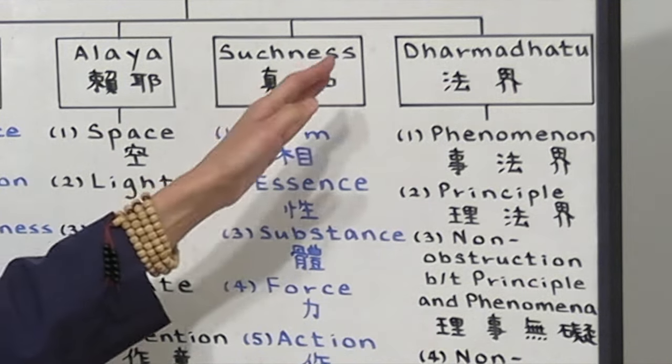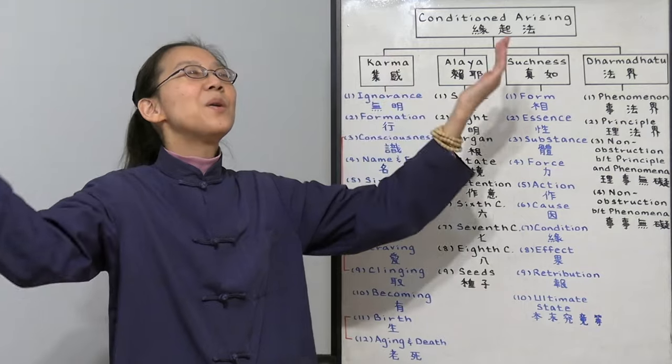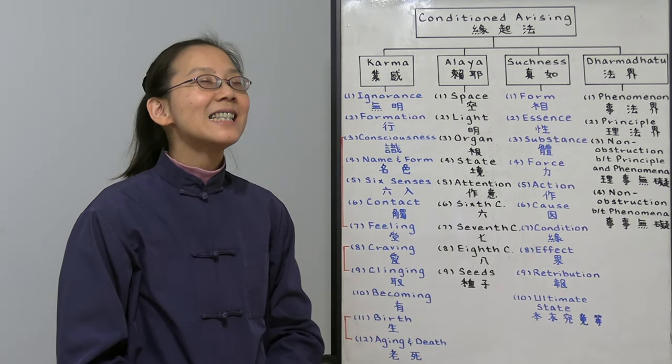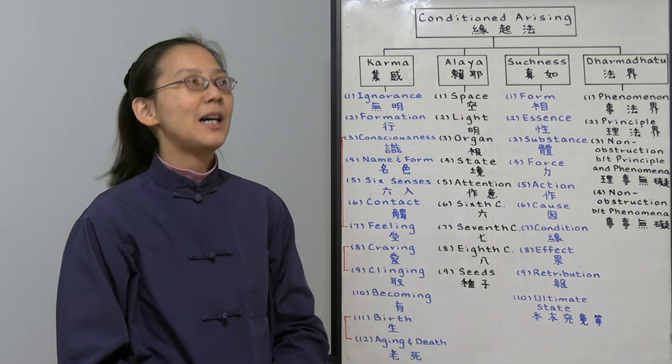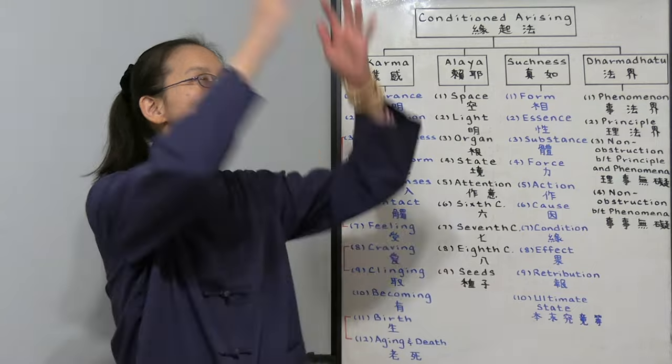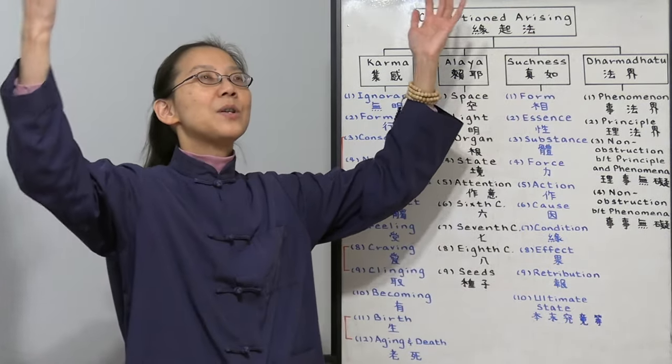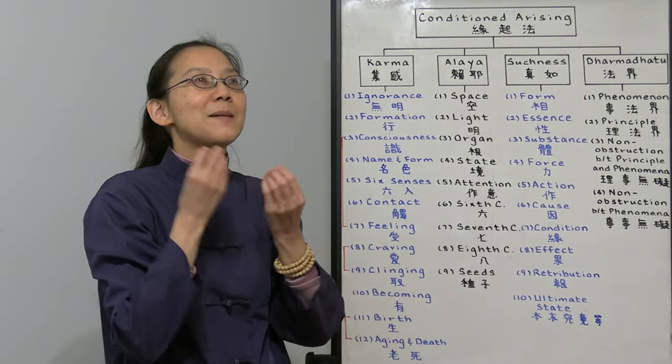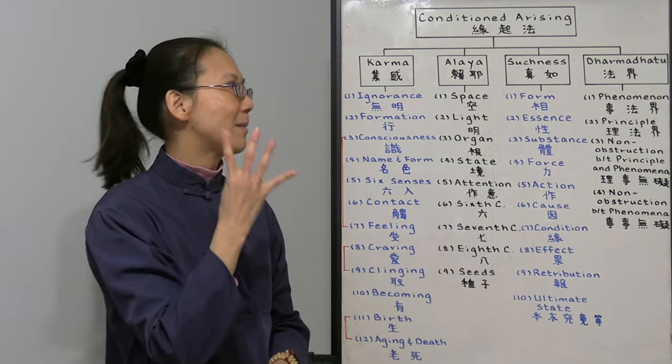Lastly, we have the Dharma Dhatu as the condition arising of the whole world. This is the Huayen school of Buddhism, based on the Flower Adornment Sutra. Because of the one mind, we are all together in this Dharma Dhatu. The entire universe is this mind. The mind is the entire universe. We have four Dharma realms.